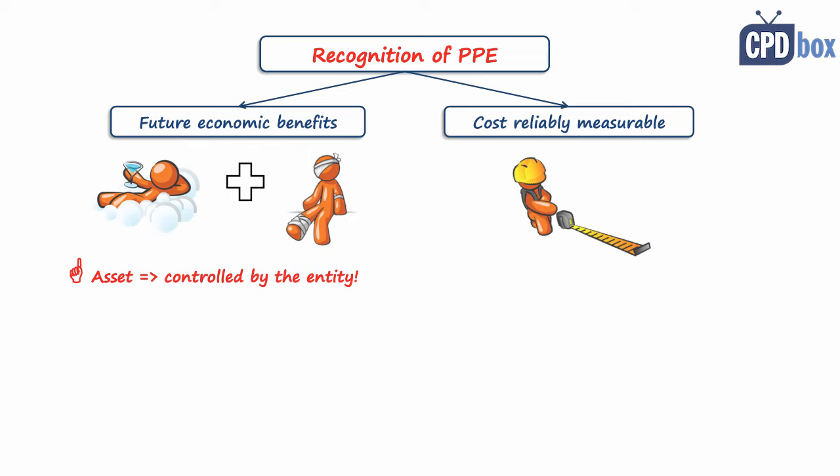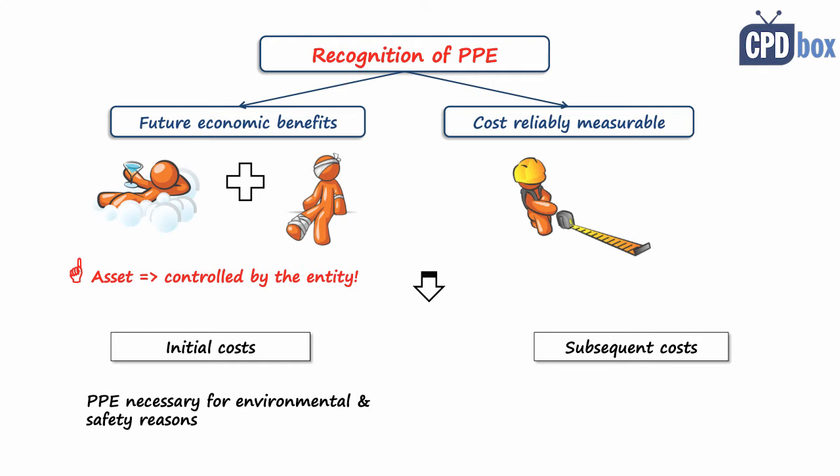So if you cannot measure it, then you cannot account for it as an asset. These two conditions apply both for initial costs and costs incurred after initial recognition or subsequent costs. Please be careful here, because some assets do qualify for recognition as an asset although they do not bring future economic benefits directly, for example water cleaning stations and similar assets. This might be required by law for safety or environmental reasons to operate other assets, so